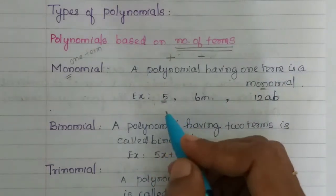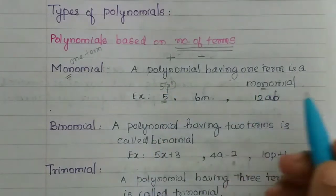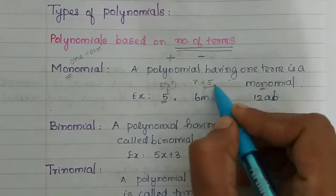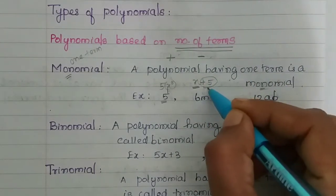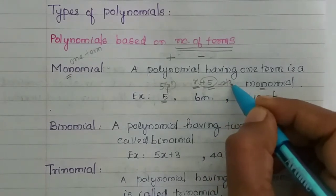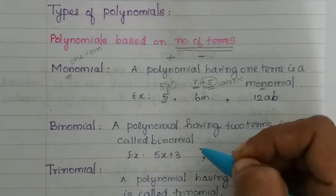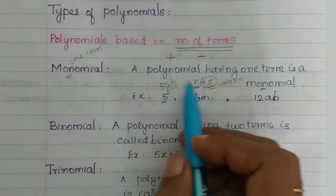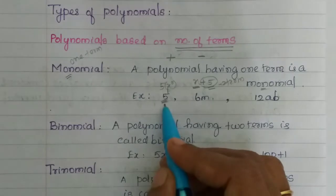For example, 5 is a constant. We can write it as 5 into x power 0 — that's one term. So 5 is a term. Also, x is a term, and 6m — since there is no plus or minus — 6m is one term. So 6m is a monomial.